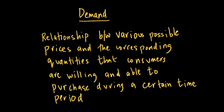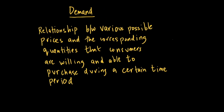Willingness and ability makes it what we call effective demand. Effective demand means that not only do you want to buy a good, but you also have both the willingness and the money to buy that good to make your demand effective. For example, I would want to buy a Lamborghini, but if I don't have the money, then my wish will never become an effective demand.